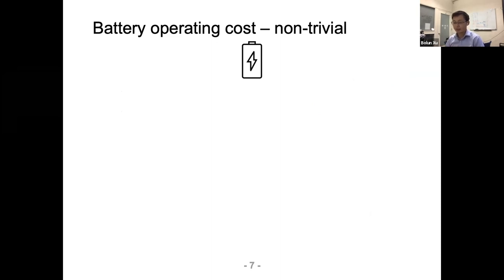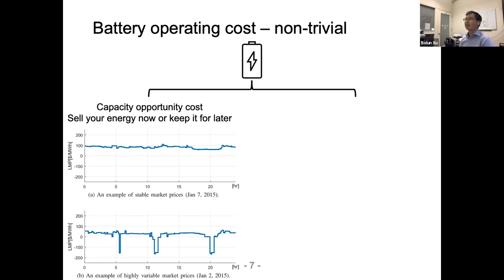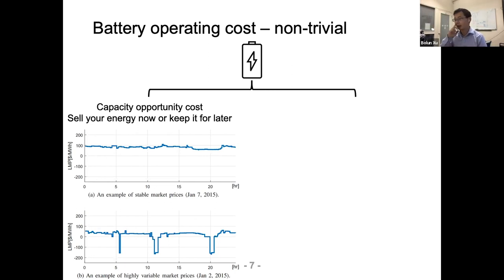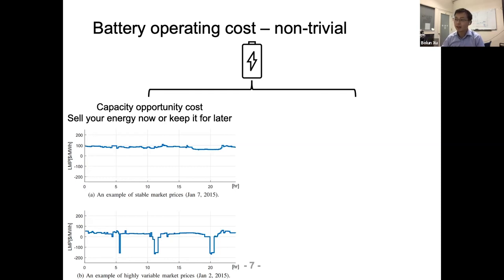However, characterizing the operating cost of battery is not trivial. There are two components. First, capacity opportunity cost: battery has limited capacity — usually one to four hours — compared to most other resources. That means to operate the battery we must plan ahead and determine what to do now based on future price expectations. For example, on a day with relatively high but flat prices around $100/MWh, there's not much profitable arbitrage opportunity for a battery — battery profits from price differences, not just generation.